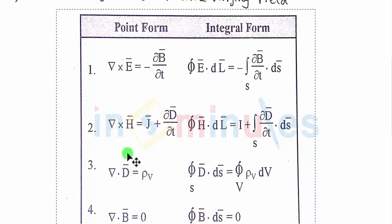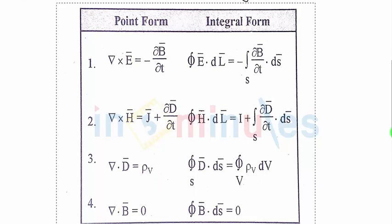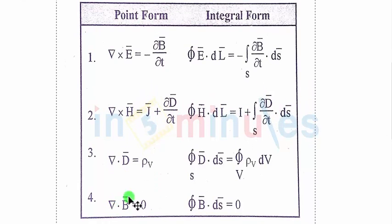Maxwell's third equation in point form for time-varying fields states that del dot D-bar is equal to rho-v, which is exactly the same as Maxwell's third equation for a static field discussed before. Maxwell's fourth equation in point form for time-varying fields is del dot B-bar equals zero, which is again the same as the fourth equation for a static field.